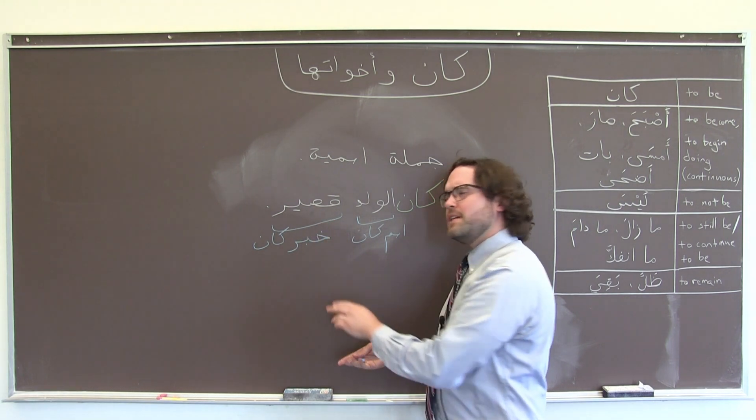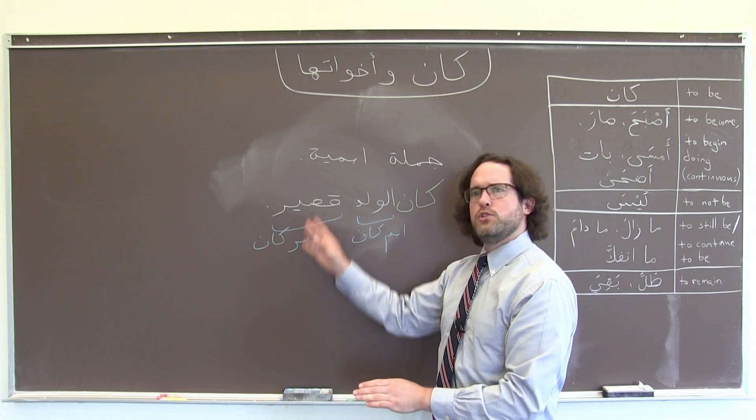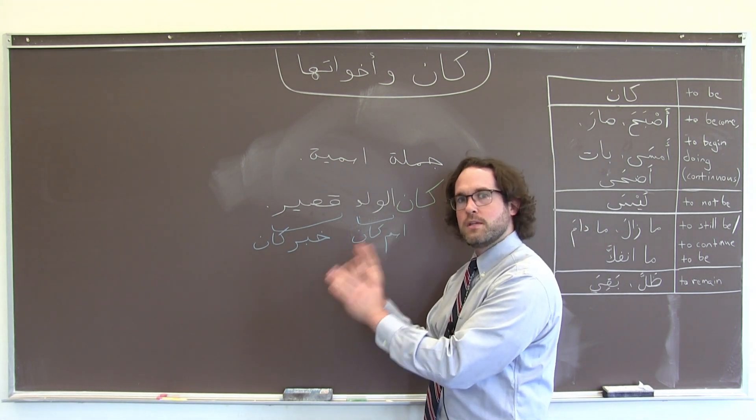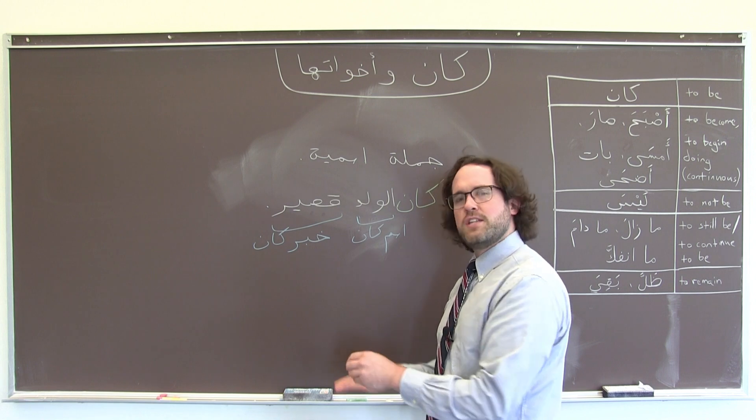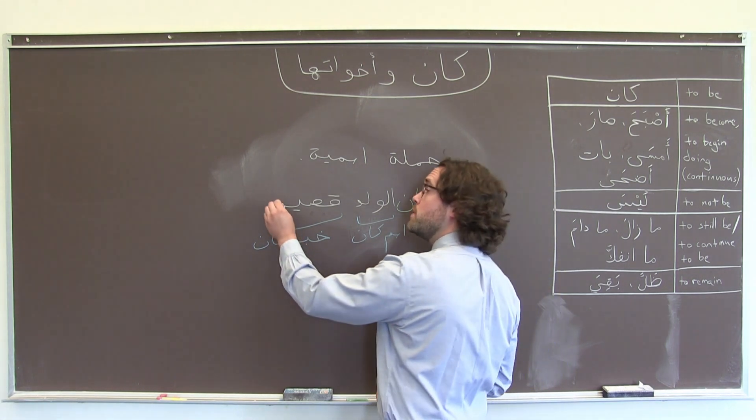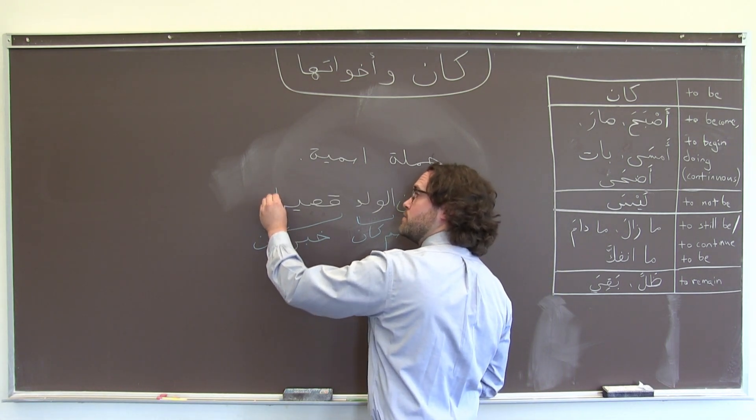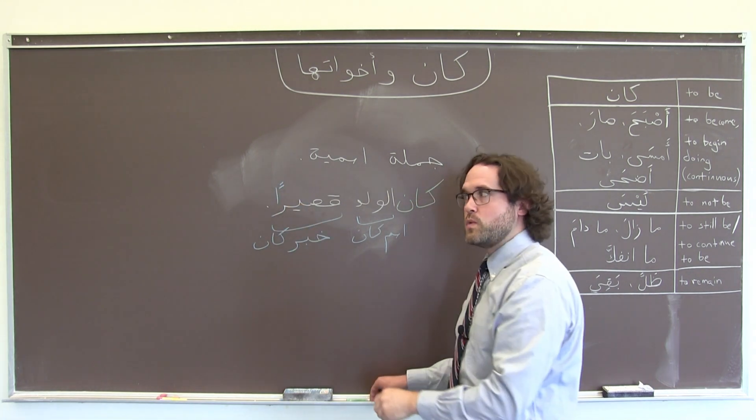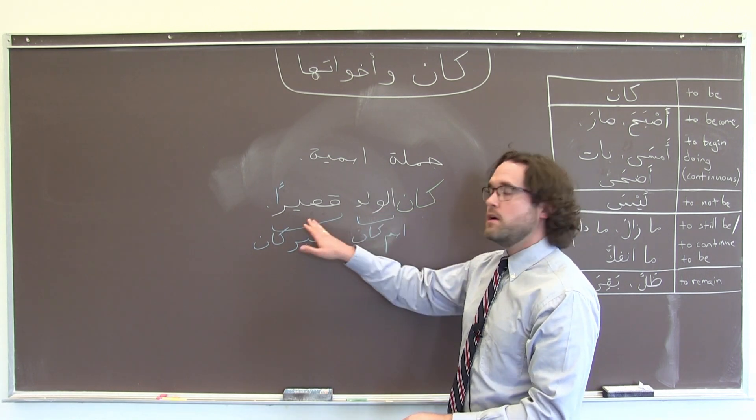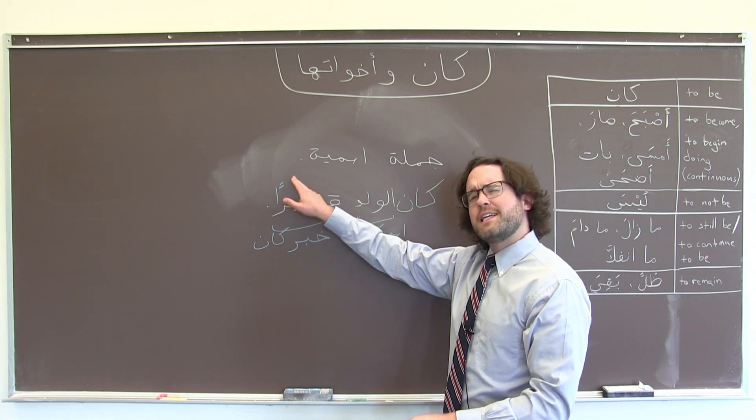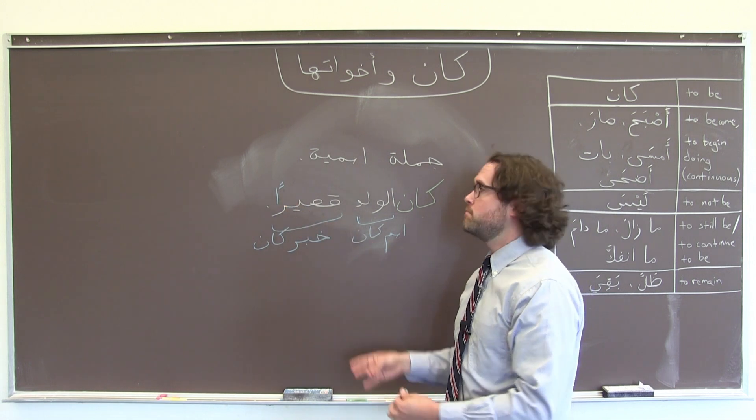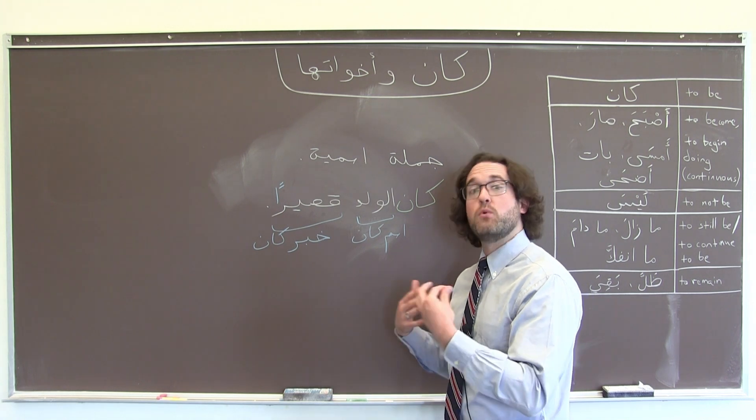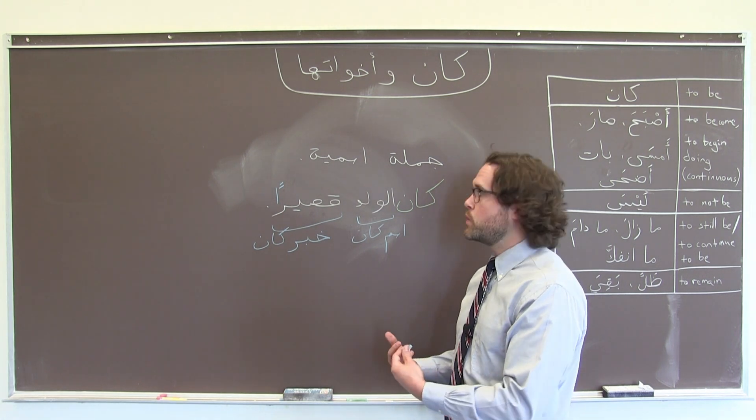Here, قصير is almost like the object of كان. كان is a verb, and so direct objects for all verbs in Arabic need to take a special case ending, that منصوب case ending. So since this is an indefinite noun, I'm going to add فتح التنوين. كان الولد قصيرا. We probably aren't going to hear that ending in speech, but we might see it if we were reading it in a book or a newspaper article in a more formal, less colloquial context.